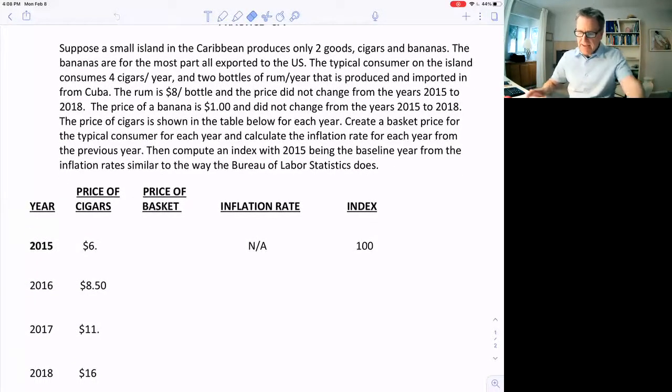Okay, so we have this little island here in the Caribbean that only makes two goods, cigars and bananas, and all the bananas are exported to the U.S. The typical consumer on the island consumes four cigars a year and two bottles of rum a year, and the rum is imported from Cuba.